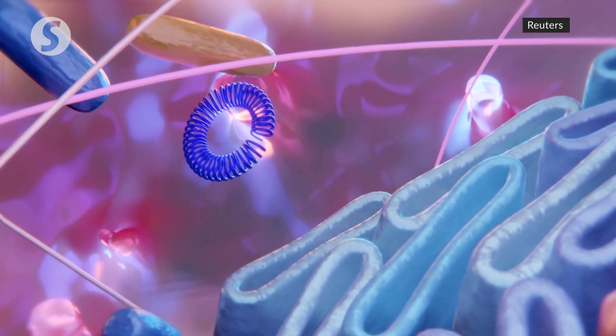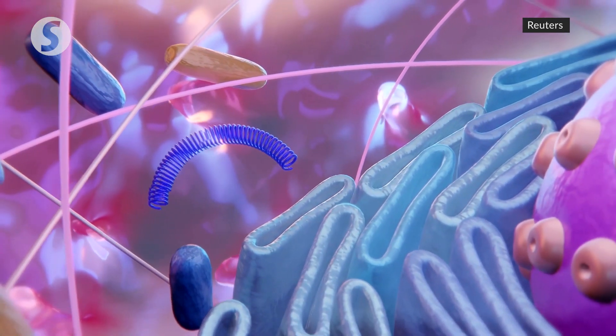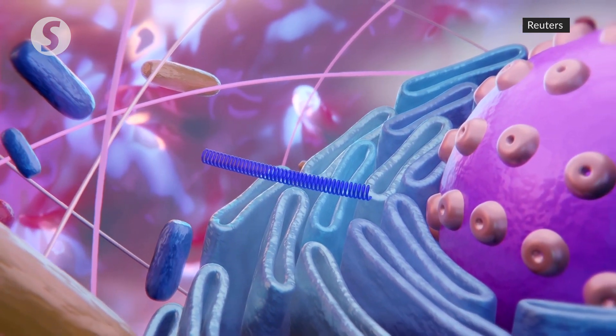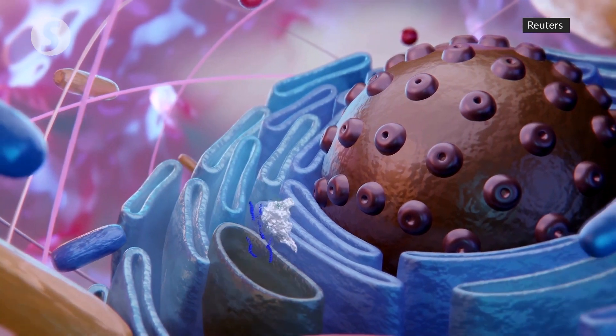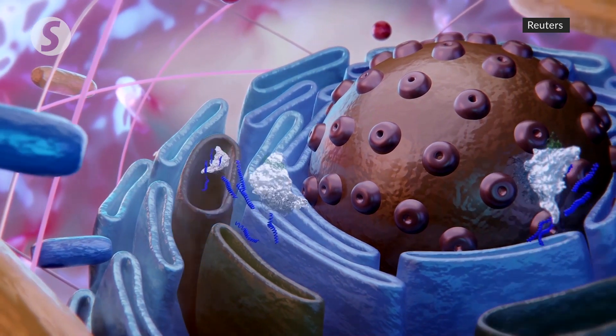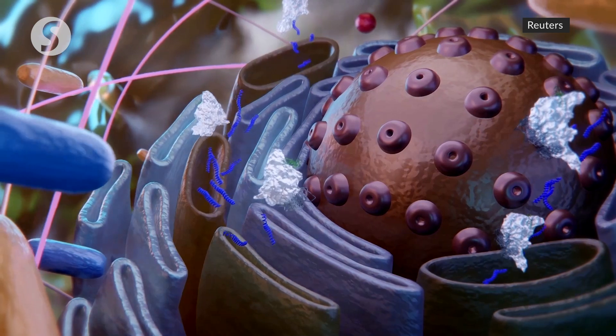A study in Frontiers in Microbiology says a coronavirus hijacks the cell's structure to reproduce. The viral RNA takes over the host cell's endoplasmic reticulum to replicate itself and to manufacture the protein parts to make new viruses.